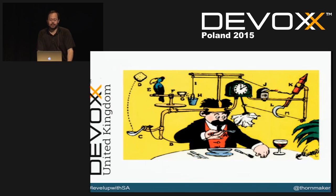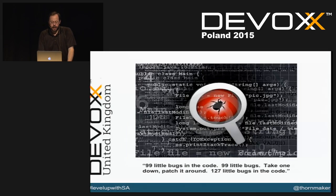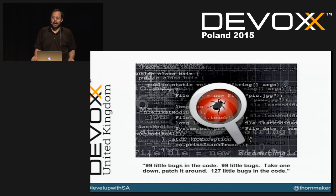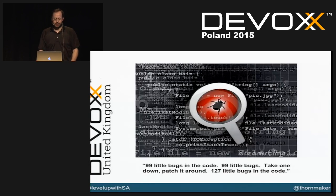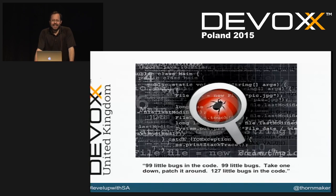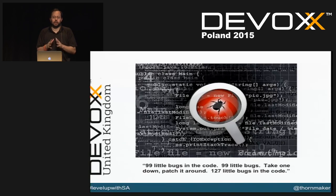Bugs are just one category within SonarCube but a very important one. A lot of code has defects — the easy ones to find are those that prevent compilation. But then there are more sneaky runtime issues that are harder to detect, which is why we have unit tests. When I talk about static analysis and bugs, I'm talking about actual defects in the code, not just performance bottlenecks.